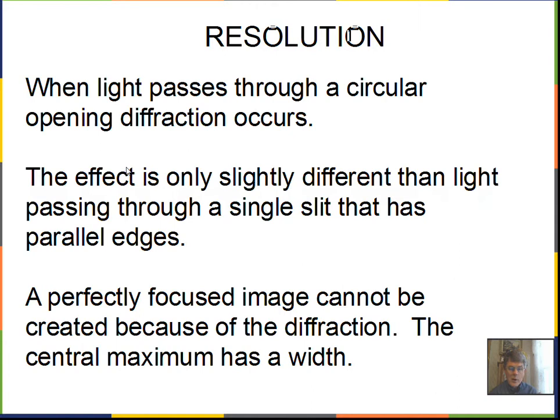Let's talk about resolution first. We've seen that light diffracts when it goes through a single slit. When light encounters a circular opening, diffraction also occurs. Even though a mirror or lens is a circular shape — not a parallel set of lines forming an opening — we still have a diffraction effect. It's slightly different from the single slit effect, with a different equation, and it causes a problem with our ability to focus images of closely spaced objects. Things that are close to each other will blur together because their central maxima overlap.